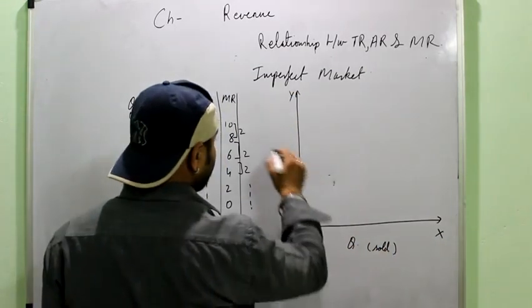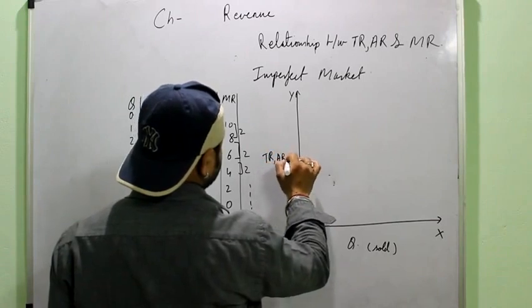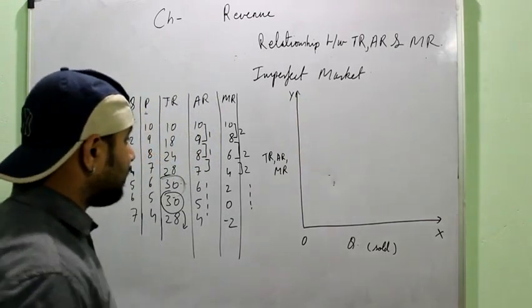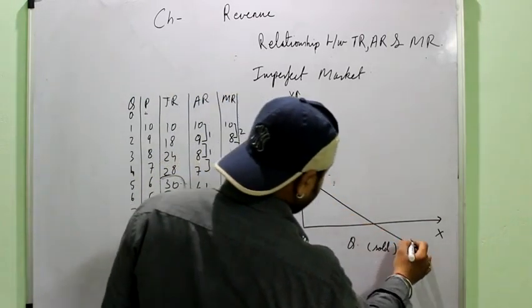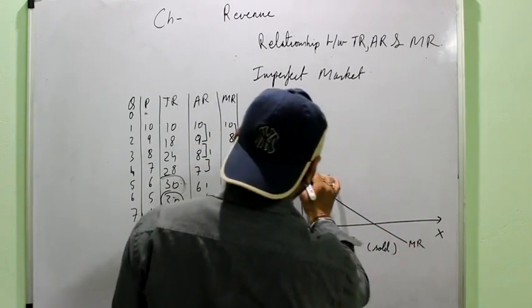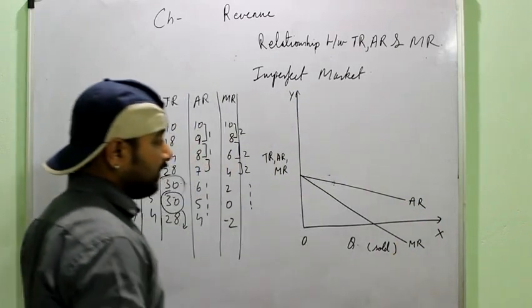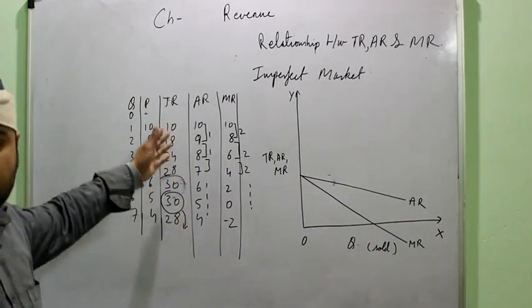On the X axis, we have the output sold. Y axis shows TR, AR and MR. So here both MR and AR will be downward sloping. You can see both are downward sloping. Both are decreasing when output is increasing.